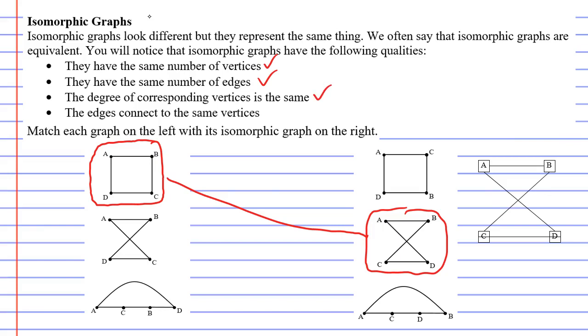And the last one is probably the most important one, which says the edges connect to the same vertices. So how do we look at that? Well, let's look at vertex A on the left. Vertex A connects with vertex B. And vertex A also connects with vertex D, like so.